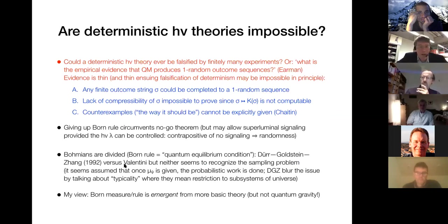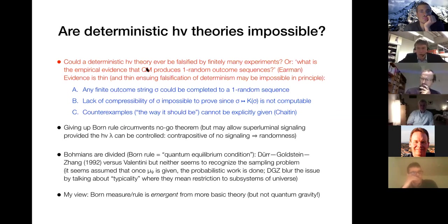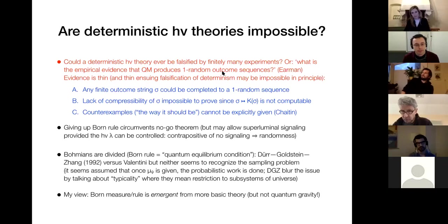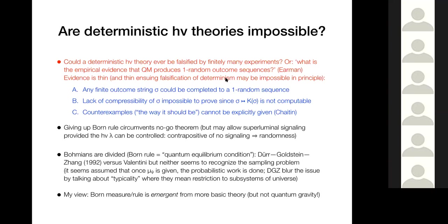Are deterministic hidden variable theories excluded now? This overstates the case, but we're almost in the setting where it is true that deterministic hidden variable theories are excluded, but it's unprovable — almost a Gödelian situation. The technical question: could a deterministic hidden variable theory ever be falsified by finitely many experiments? I would say the evidence is thin and the ensuing falsification of determinism may even be impossible in principle, except at a purely theoretical level.